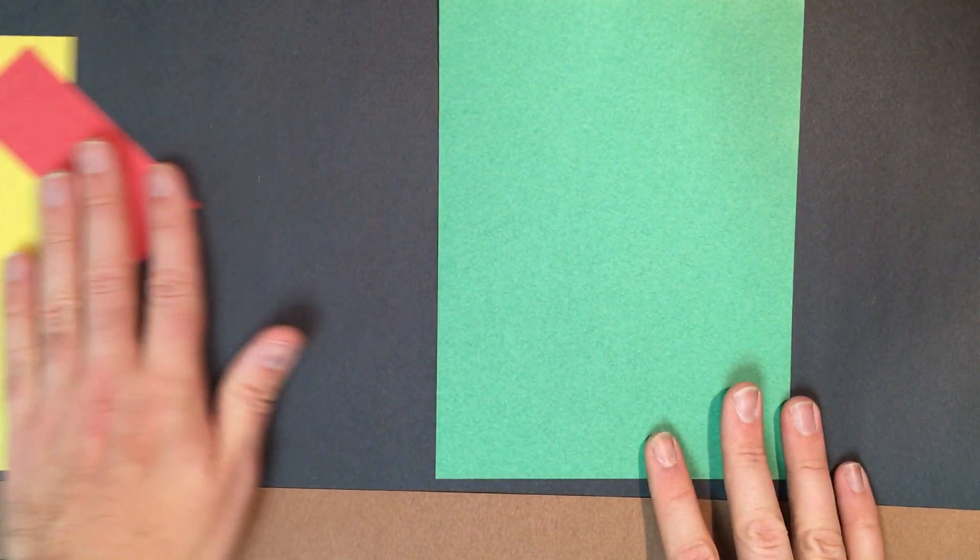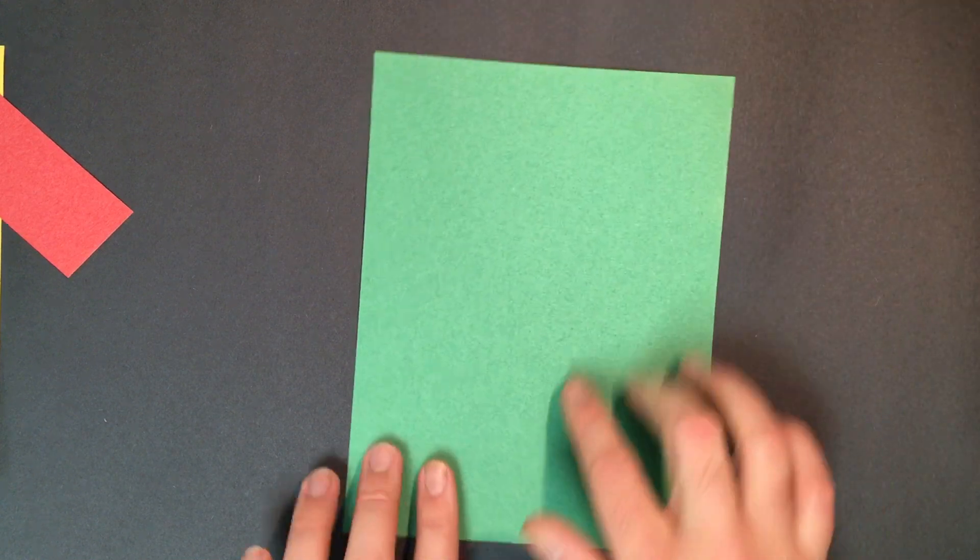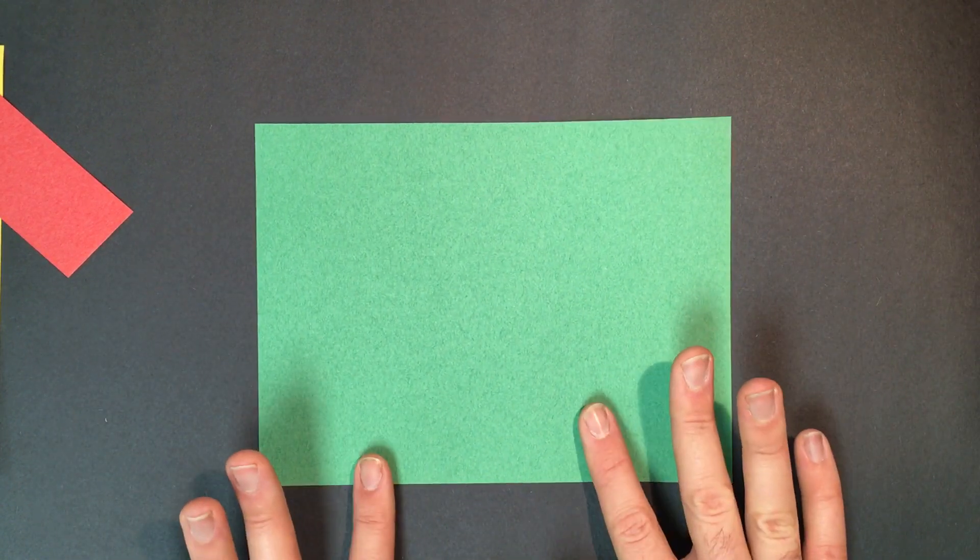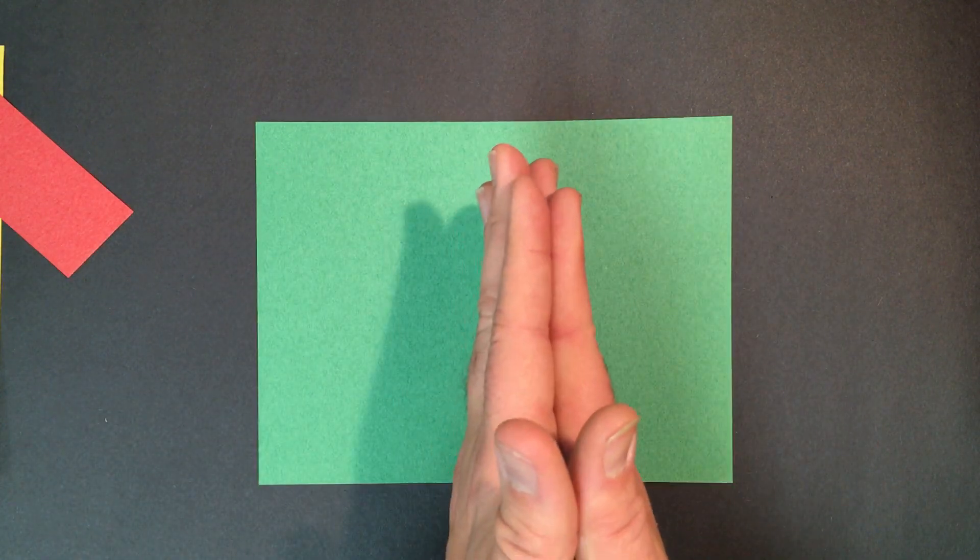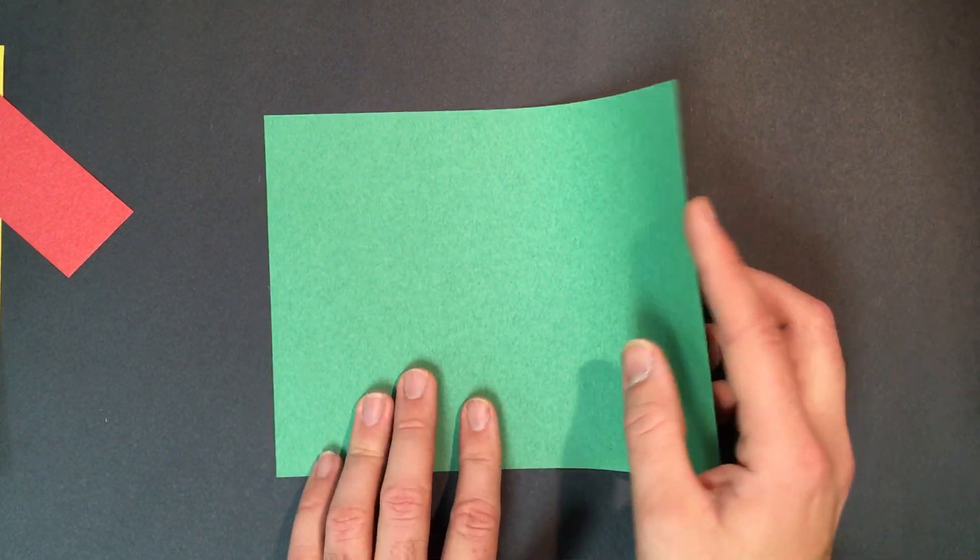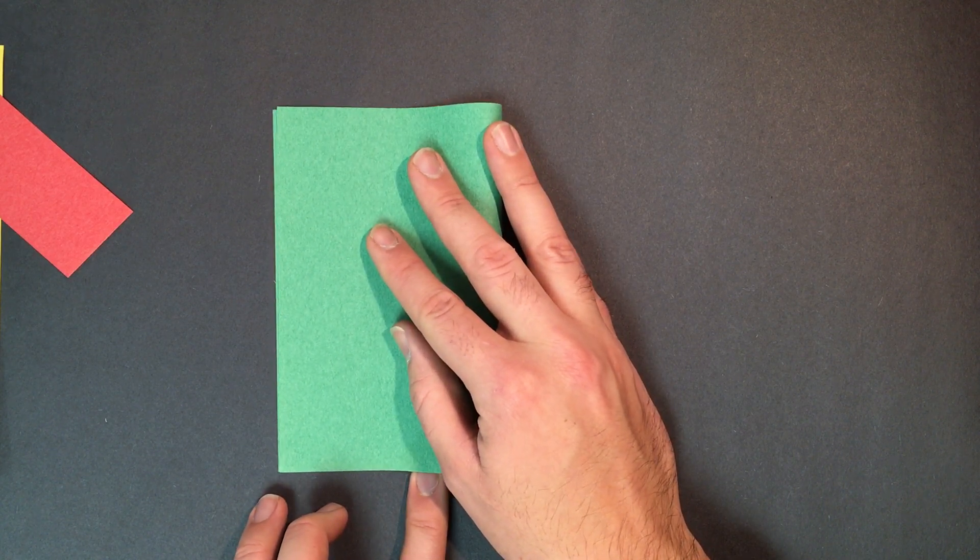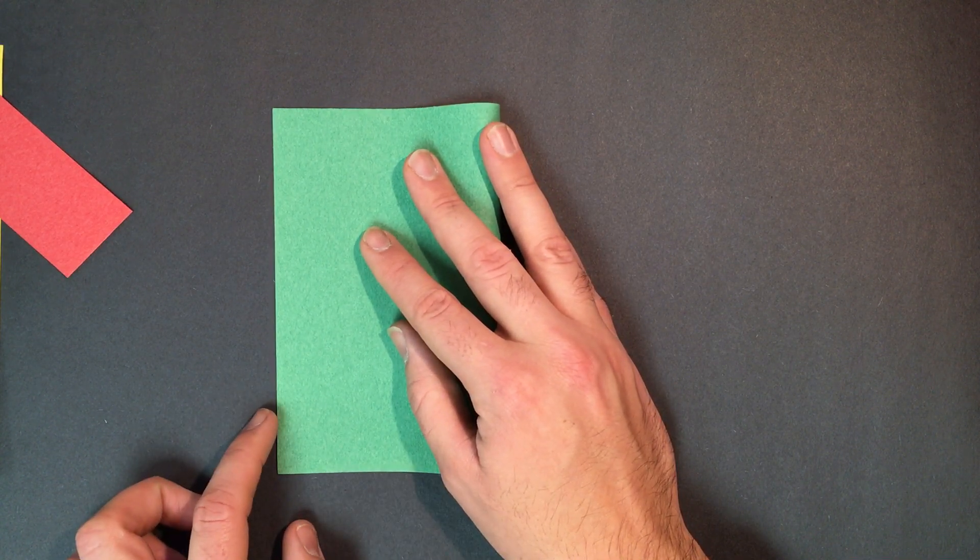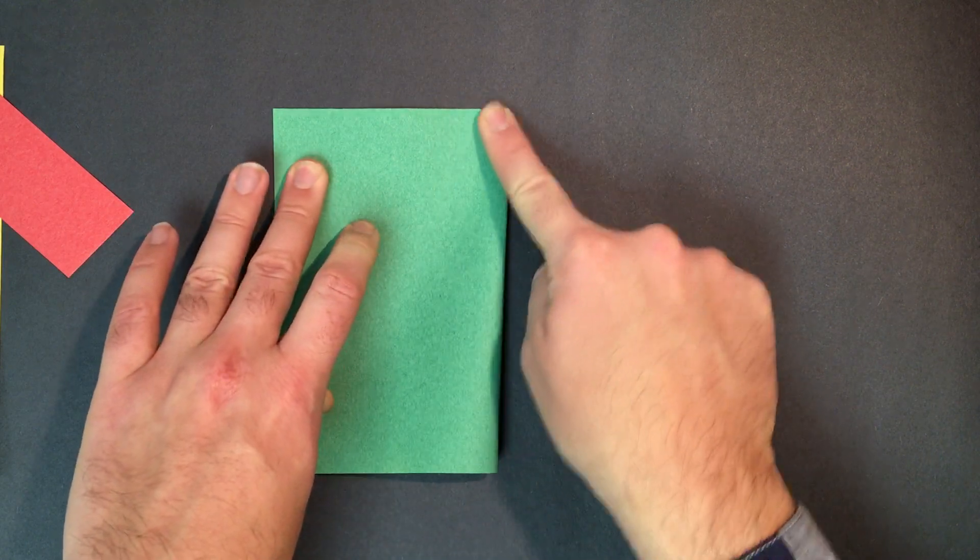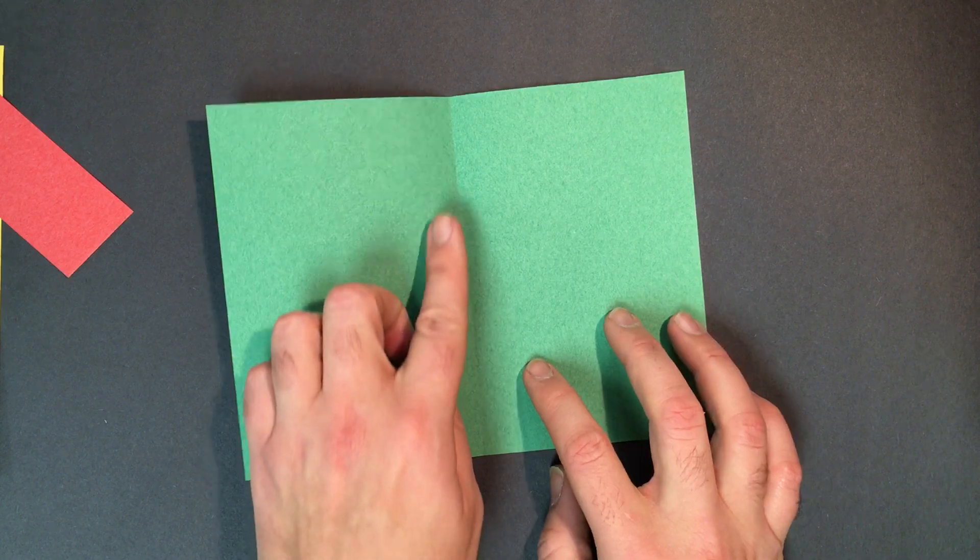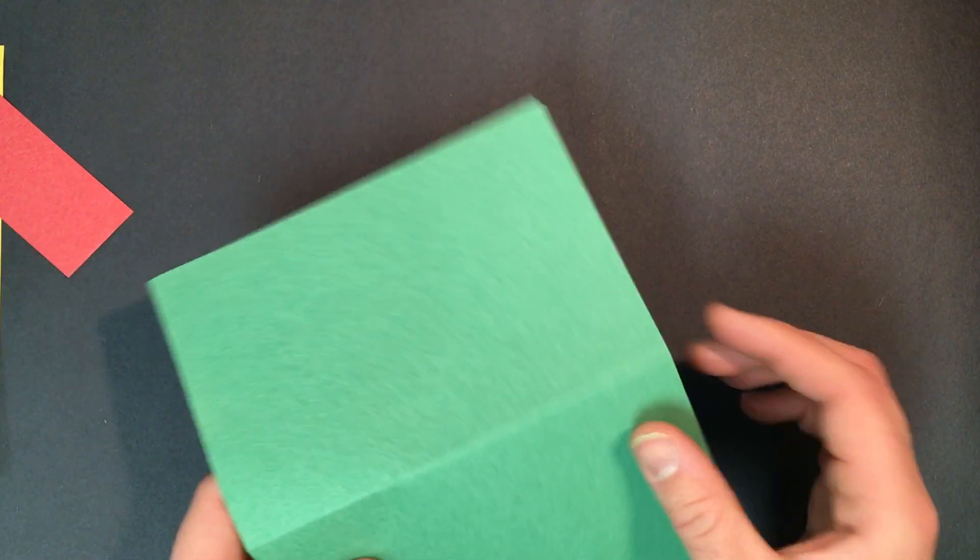Alright, so the first thing I want to do is I want to do my green paper here. I want to turn it this way. Then what I want to do is I want to fold it in half. So I'm going to take this half over here. I'm going to just simply fold it in half this way. Try to be as exact as possible. I'm going to crease it down. Don't push too hard, just enough to create a fold so that we can see where the center of the paper is.